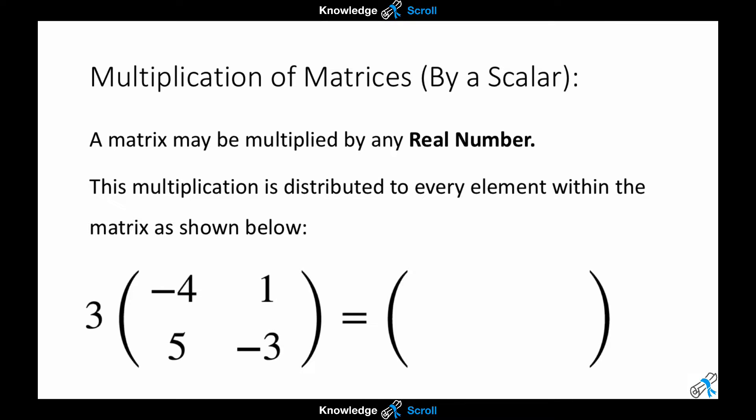Here we have a 2x2 matrix which contains the elements negative 4, 1, 5, and negative 3. And this matrix is being multiplied by the whole number 3.